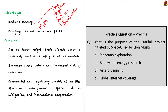The project has certain concerns. First, since the satellites are smaller and at lower height, the signal covers only a relatively small area, so many more satellites are needed to reach every part of the world. Second, it increases the number of satellites in space, thereby increasing space debris and the risk of collision. Third, the development and deployment of satellite constellations like Starlink raises commercial and regulatory considerations including spectrum management, space debris mitigation, and international cooperation.